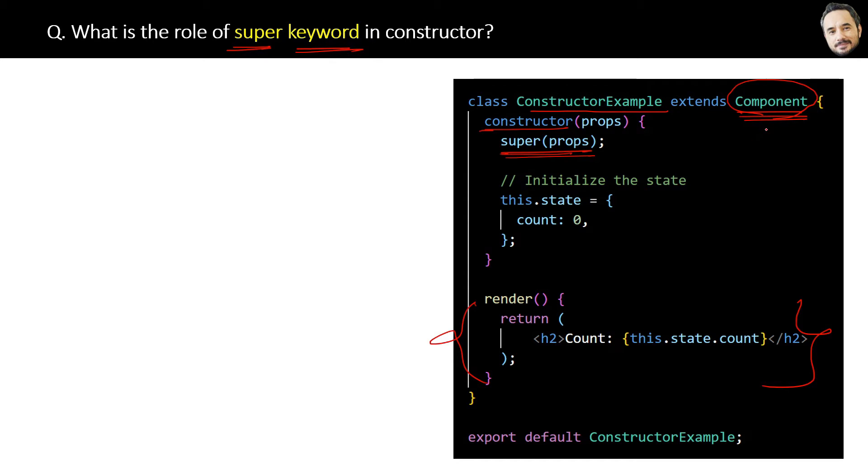The rule is: whenever you execute the constructor of a child class, before that, the constructor of the parent class component must be executed. That is the rule, and for that purpose we use this super keyword. You can try removing